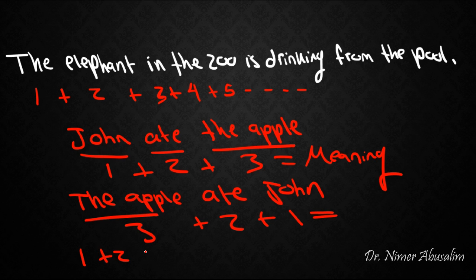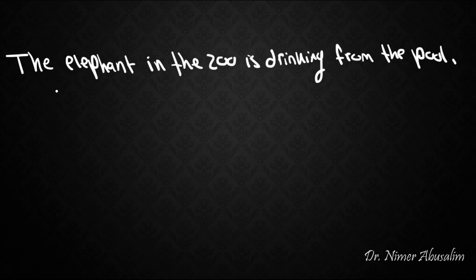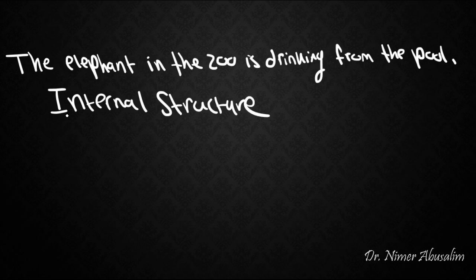So one plus two plus three does not equal three plus two plus one — of course in mathematics it does, but here it doesn't. The point is we have to look at the internal structure of a sentence. We have to recognize that somehow the word 'elephant' is more connected to 'the' than it is to 'in.'